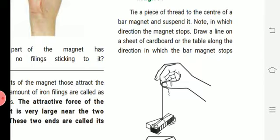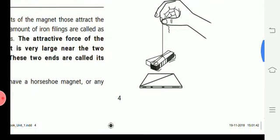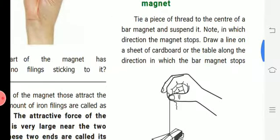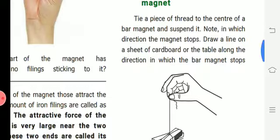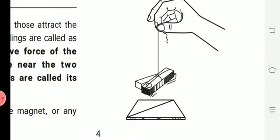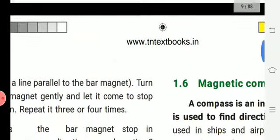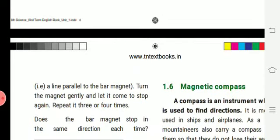Note, in which direction the magnet stops. Draw a line on a sheet of cardboard or the table along the direction in which the bar magnet stops. That is a line parallel to the bar magnet. So the bar magnet stops in the same direction each time.